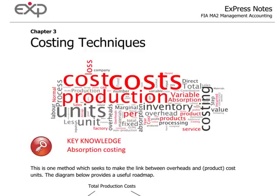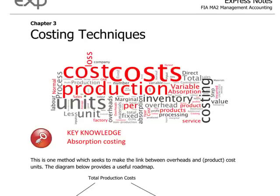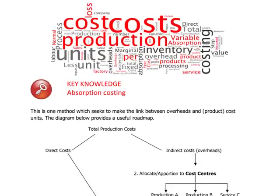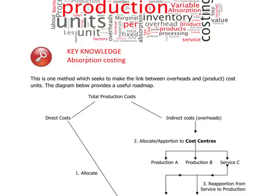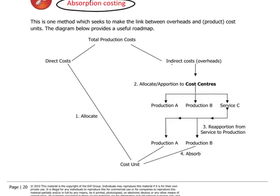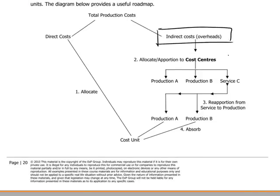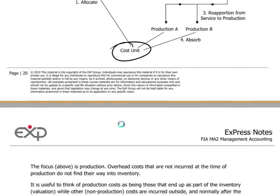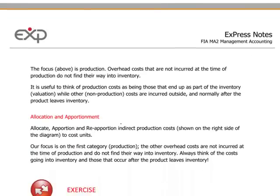Costing techniques form a central part of the management accounting paper. We should feel pretty much at home with the idea that absorption costing is aimed at handling the problem of associating indirect or overhead costs with cost units themselves. That's really the principal focus. Direct costs are no problem, because they are, by definition, directly attributable to the product.